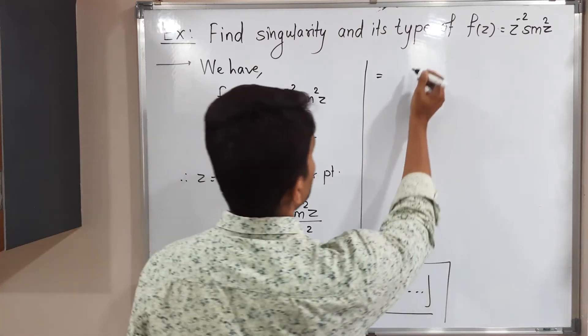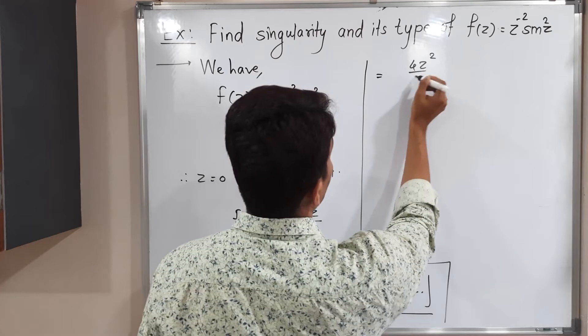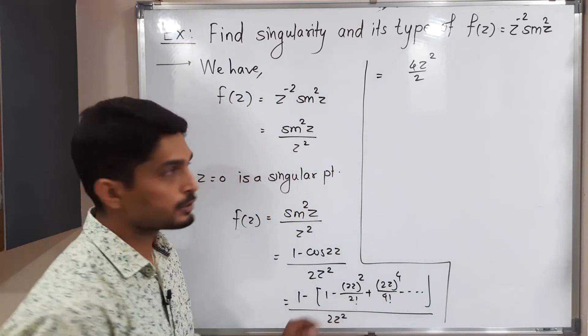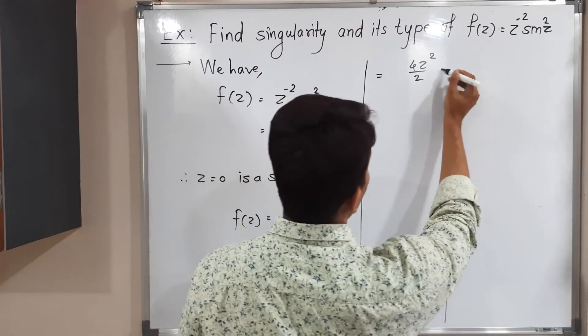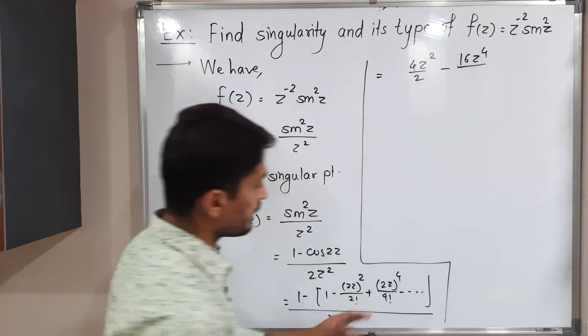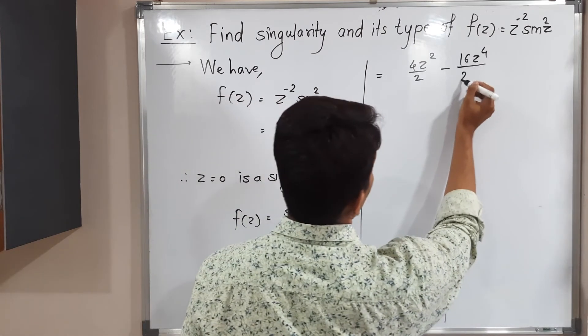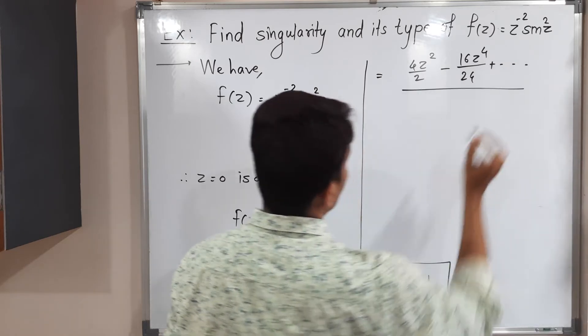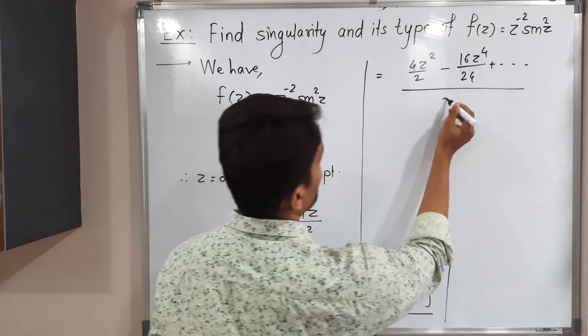So minus minus plus 4z²/2! means 2, plus minus minus 16z⁴/4! that is 24, plus and so on, whole divided by 2z². We can divide separately.